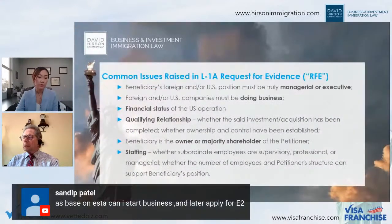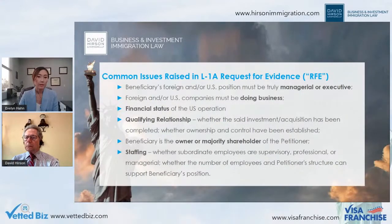ESTA stands for Electronic System for Travel Authorization. You apply online and once confirmed, the authorization typically lasts two years — you can show up at the US border and be admitted for up to 90 days. It is only available to nationals of countries that have qualified agreements with the US, and it obviates the need to go to the US consulate for a visa stamp.